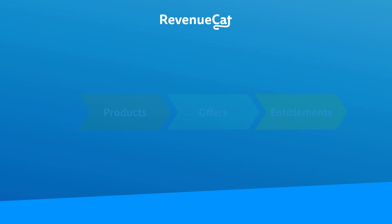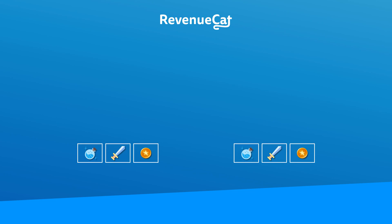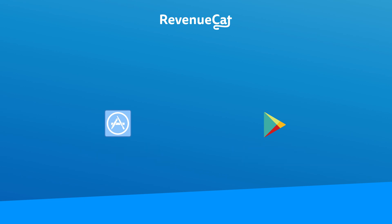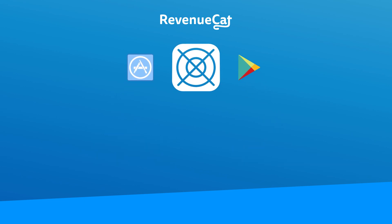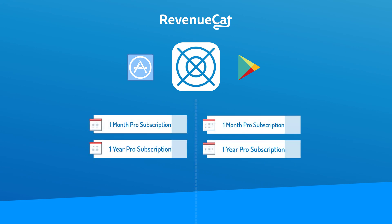Products are simply the in-app purchases you've configured on the App Store, Google Play Store, or other stores. Let's say you have an app on both Google Play and Apple App Store, and users can buy a one-year pro subscription or a one-month pro subscription. That means you're going to have four products: a Google Play one-year pro, an Apple App Store one-year pro, a Google Play one-month pro, and an Apple App Store one-month pro.